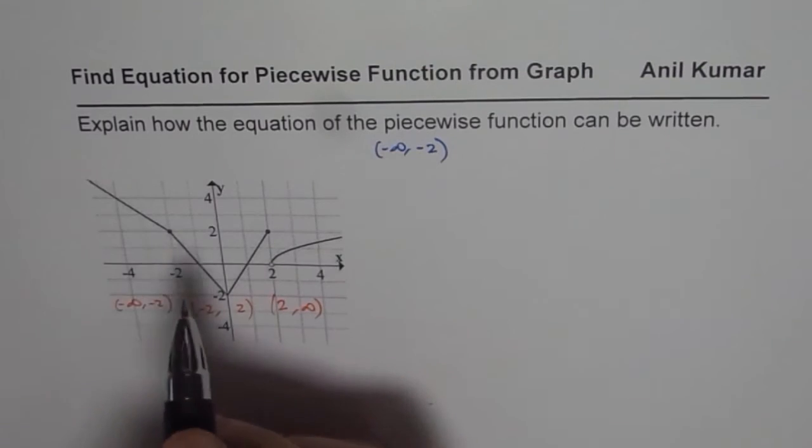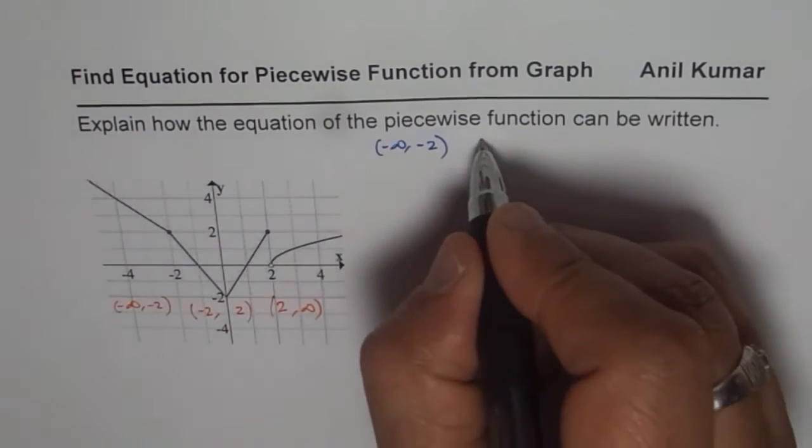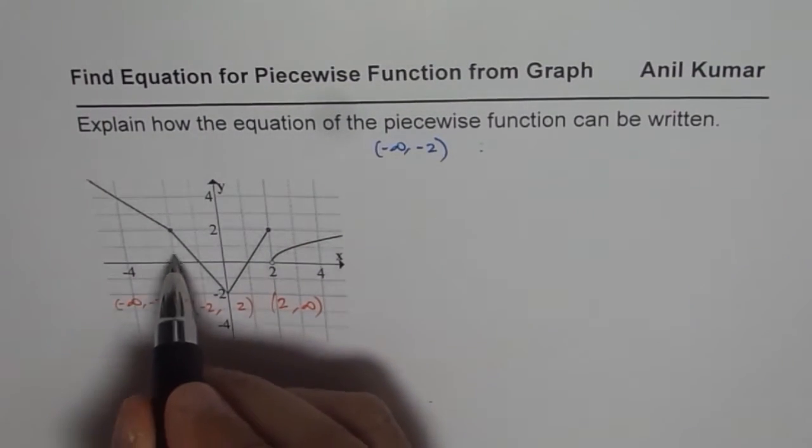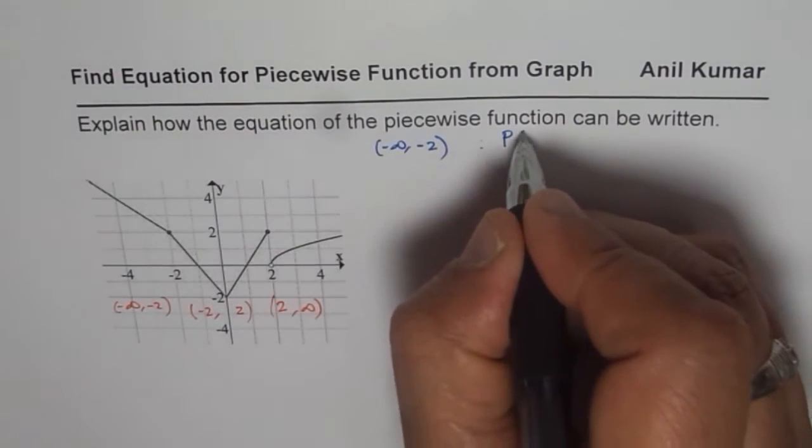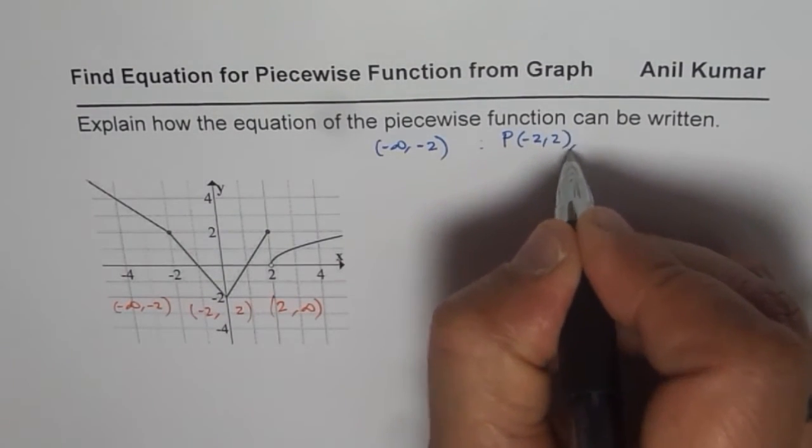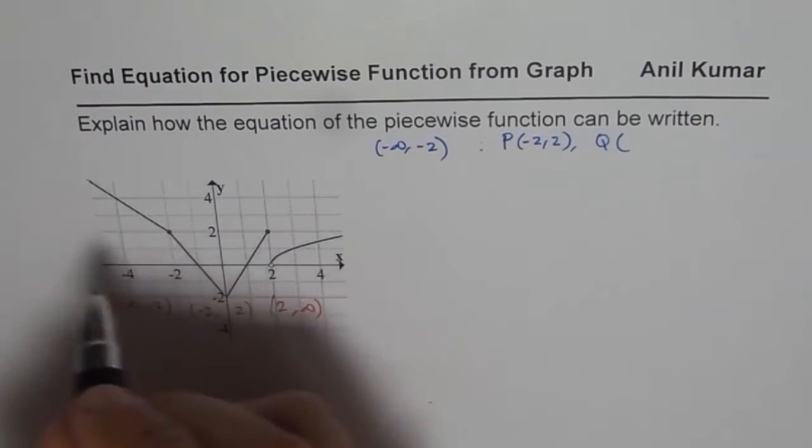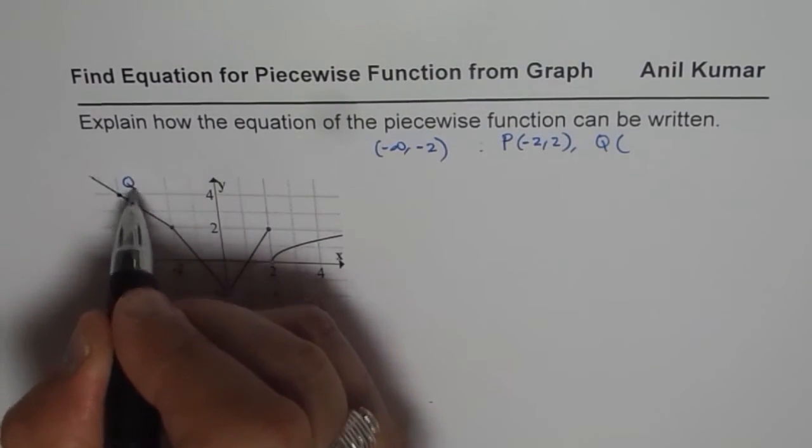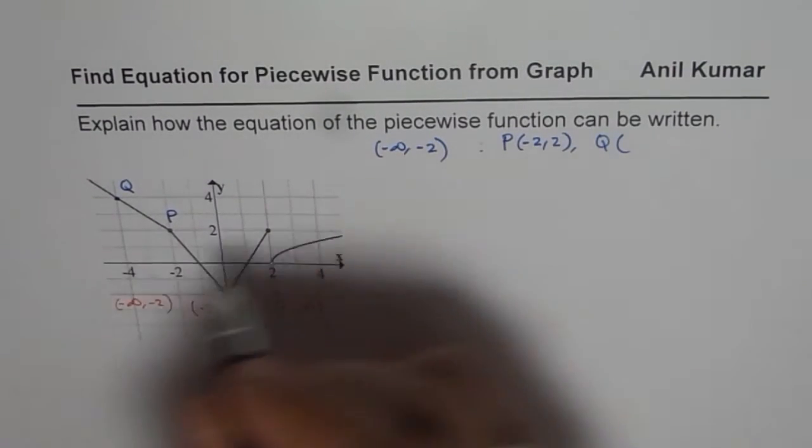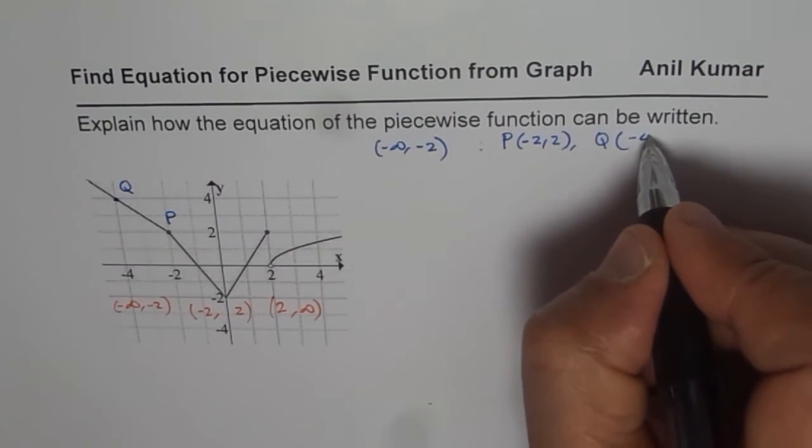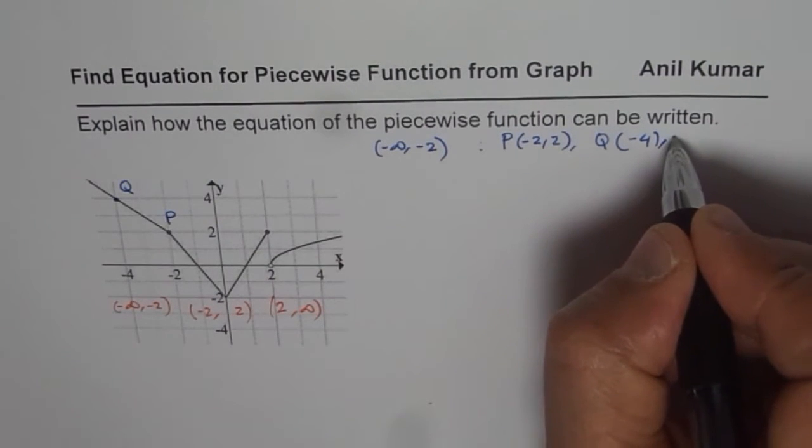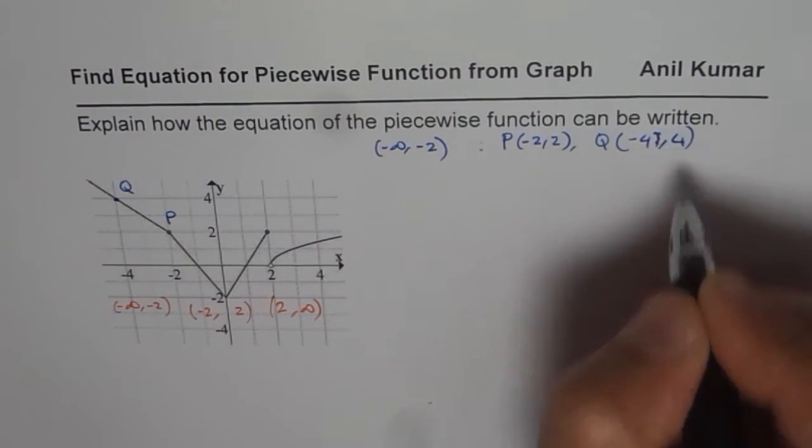So let's take two points on this line. One other point on this line is minus 2, 2. So one point, let's say P, is minus 2, 2. And then another point Q, we can consider this point Q, this is point P for us, is minus 4, 4. So minus 4, 4 is the other point.